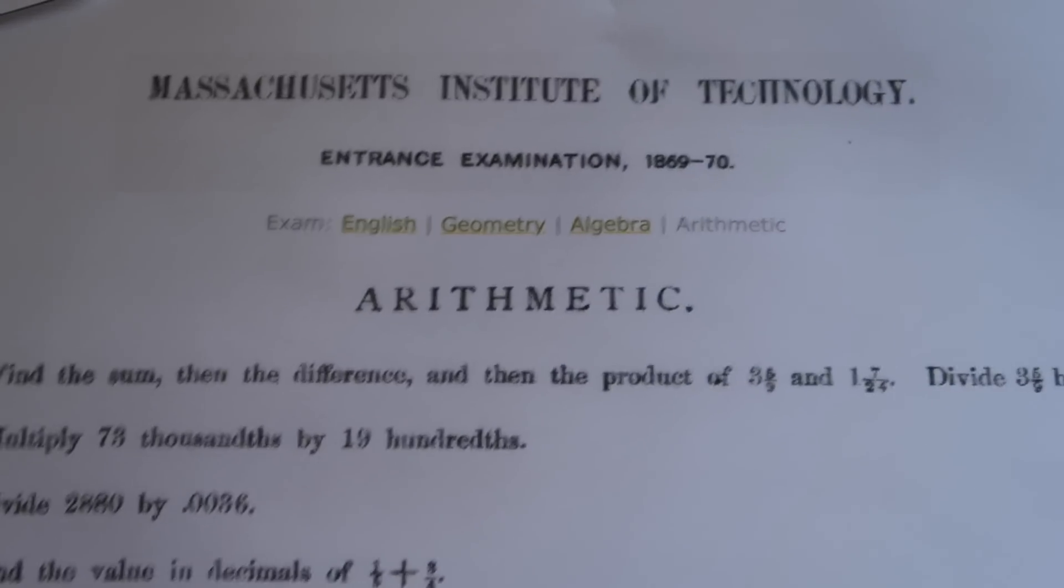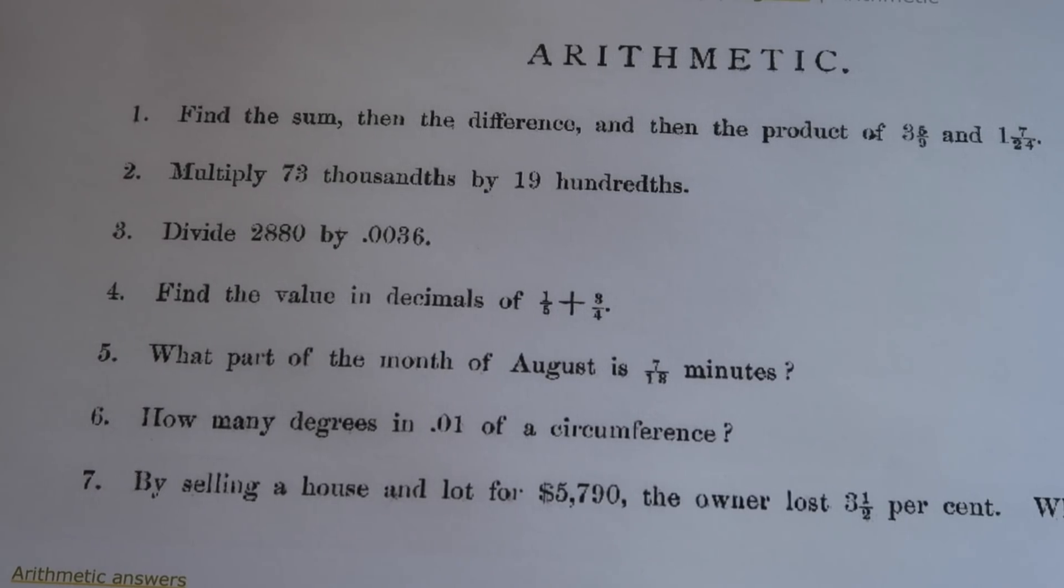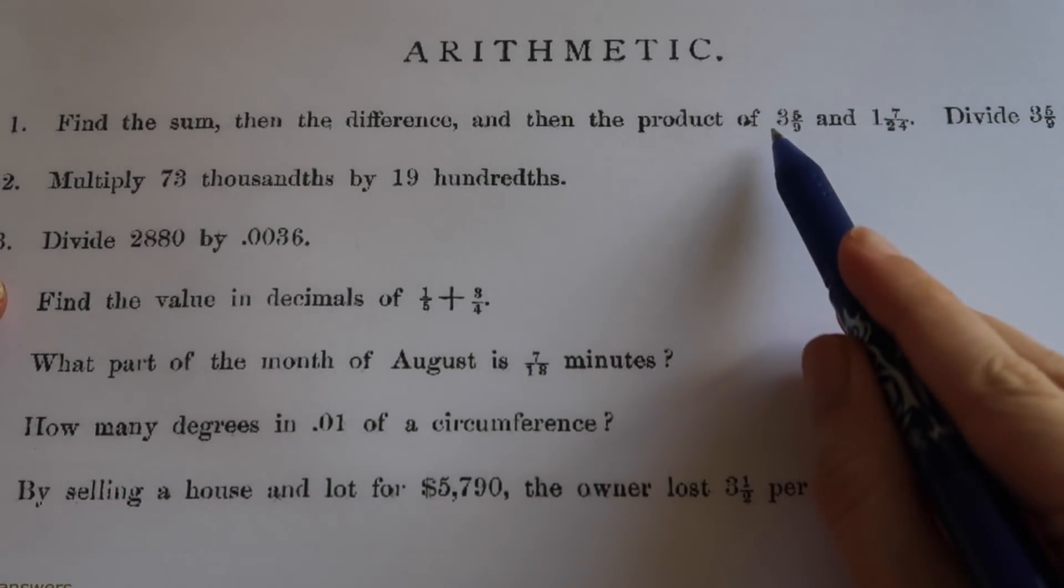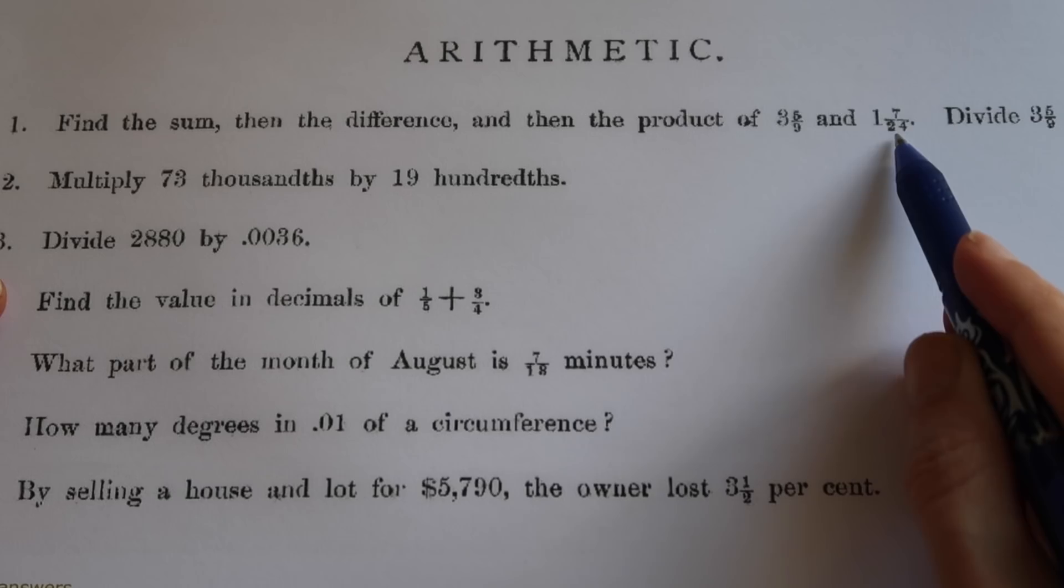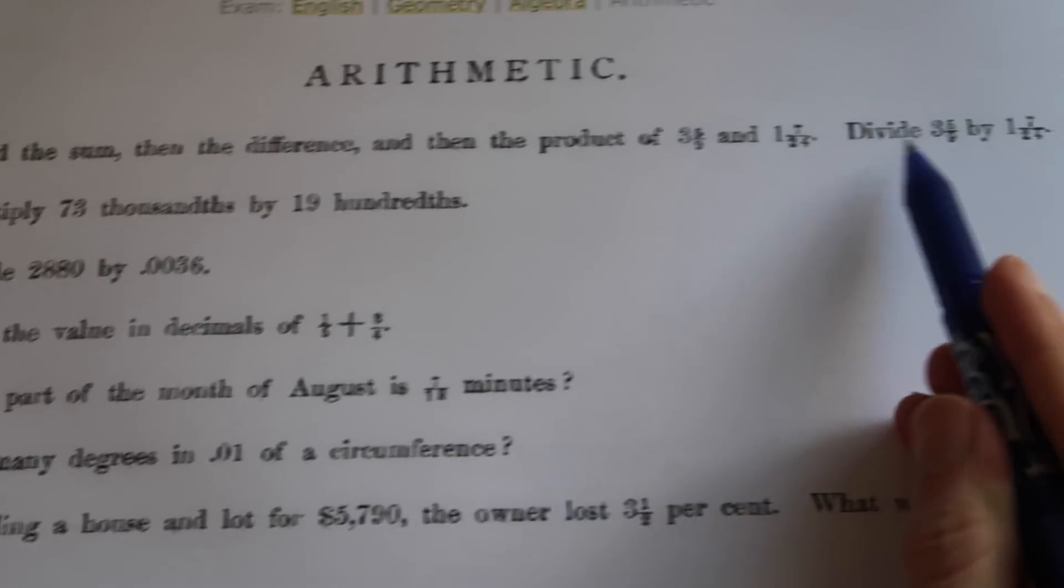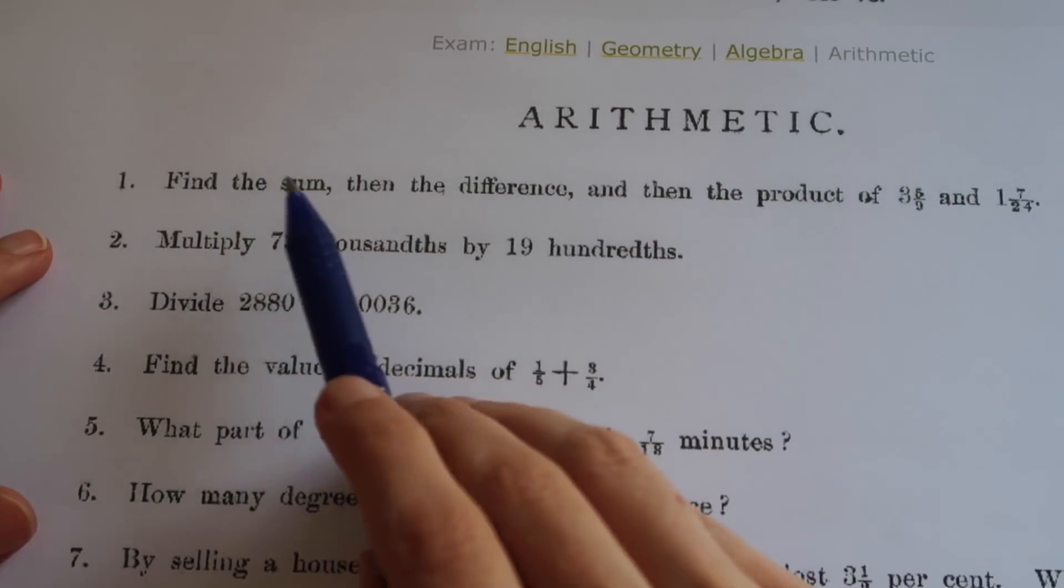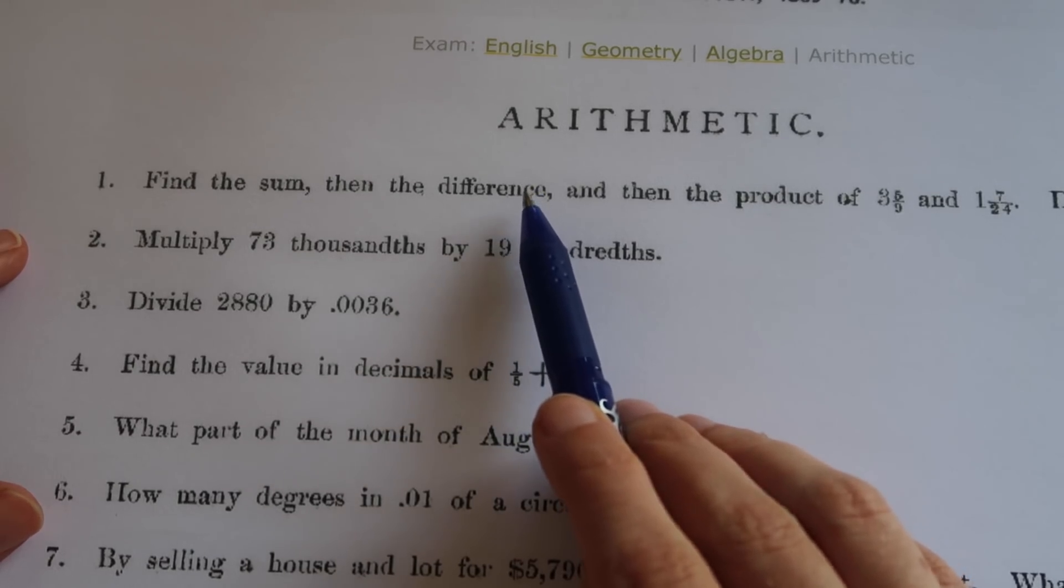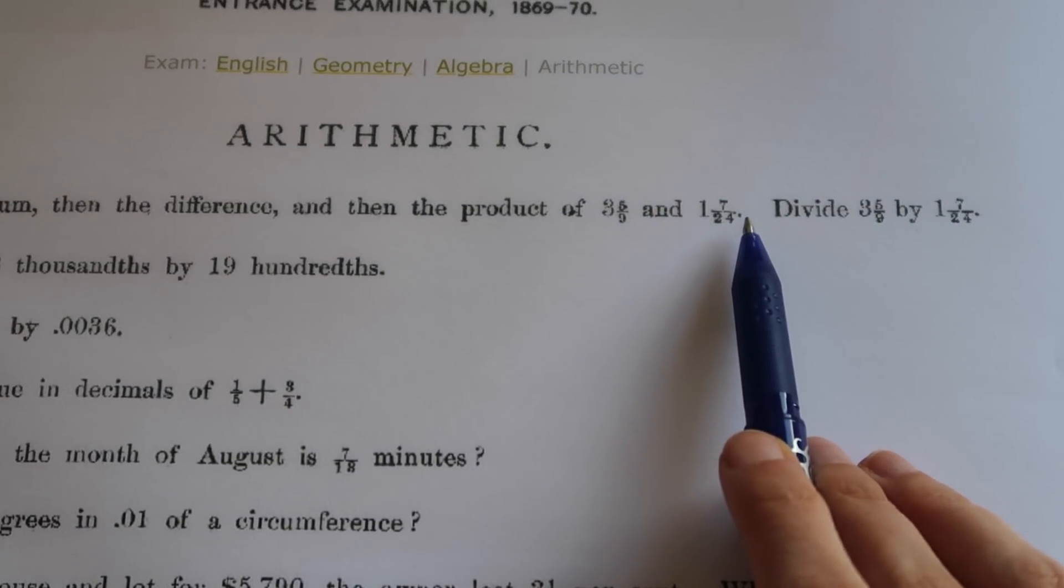So let's have a look at our exam now. These are our MIT arithmetic questions. If we look at question one: find the sum, then the difference, and then the product of the fraction three and five ninths and one and seven twenty-fourths, and then divide that first fraction by the second one. I'm actually going to skip finding the sum and the difference because I don't think it's worth trying to use the slide rule for that.